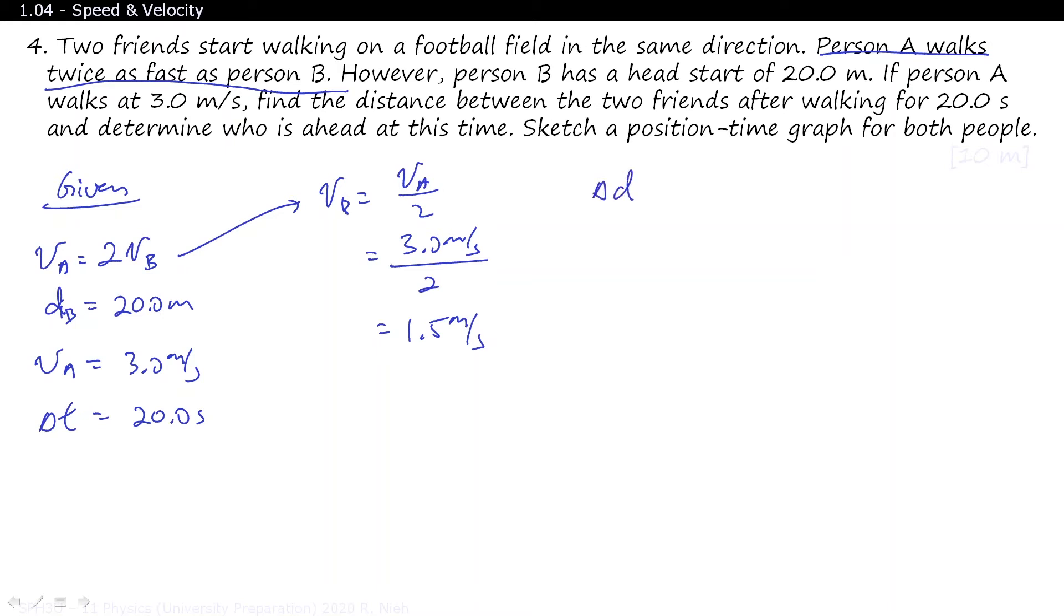Another thing to keep in mind is that when you state the formula like this, delta D equals V delta T. Delta D, by definition, is final position minus initial position, which equals V delta T. So technically speaking, we can figure out where someone is based upon their speed times time on top of where they started. And you know that for DB, that equals 1.5 meters per second times 20.0 seconds. And person B had a head start of 20 meters. So that works out to 30 meters plus 20 meters, which equals 50 meters.